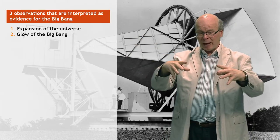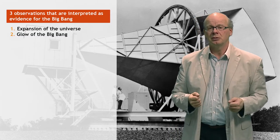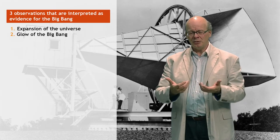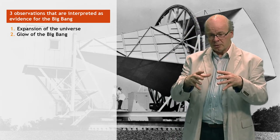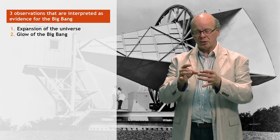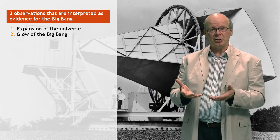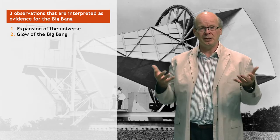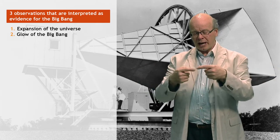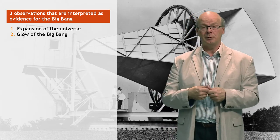If we go even further back to the beginning, the universe wasn't 3,000 degrees, but it was 100,000,000 degrees. And 100,000,000 degrees is so hot that the same thing happens to the nuclei of the atoms that happens in the interior of our sun. Material burns in nuclear fusion in the interior of our sun because hydrogen atoms bump into each other so fast that they stick together and make helium nuclei.